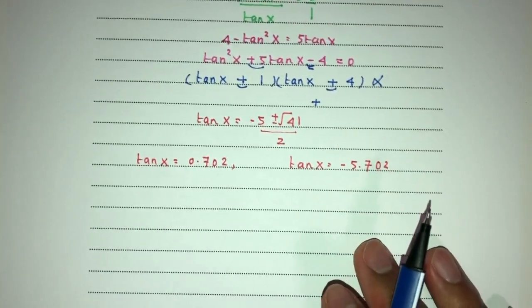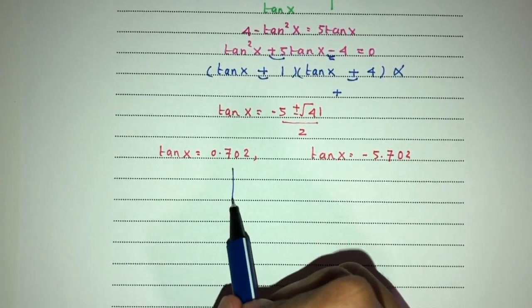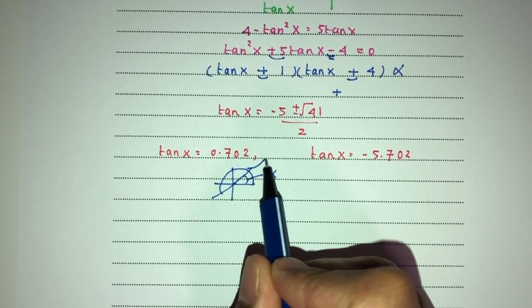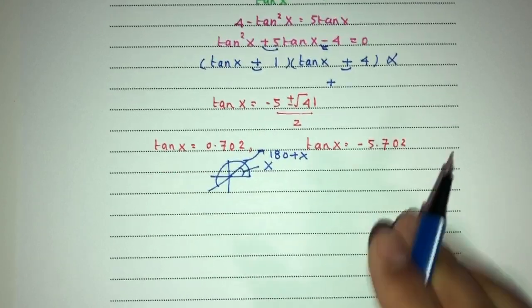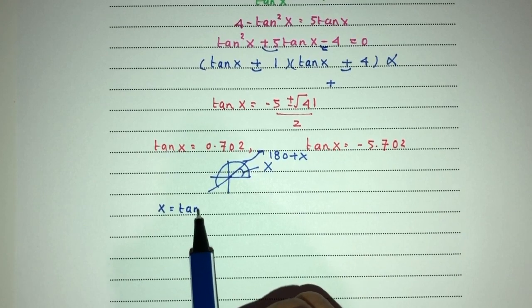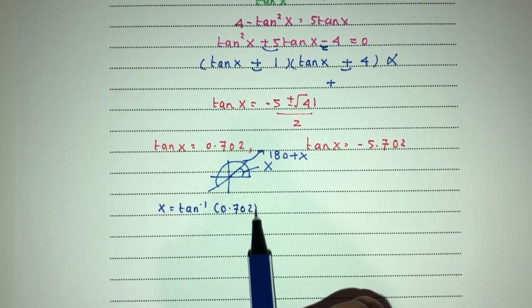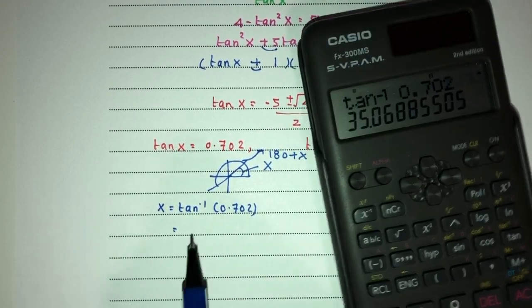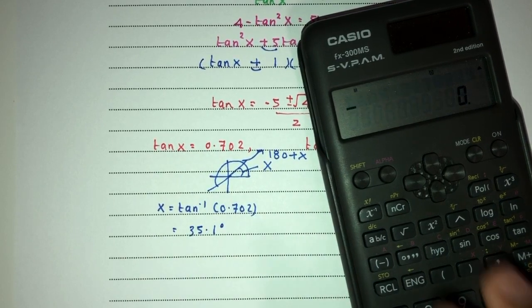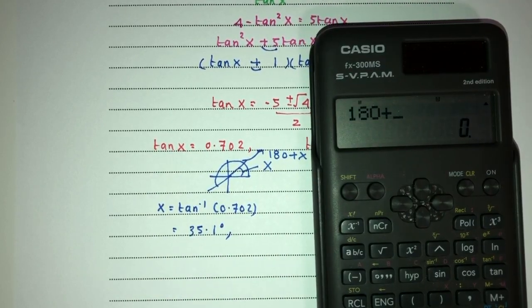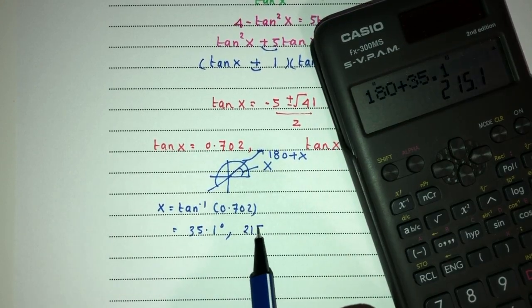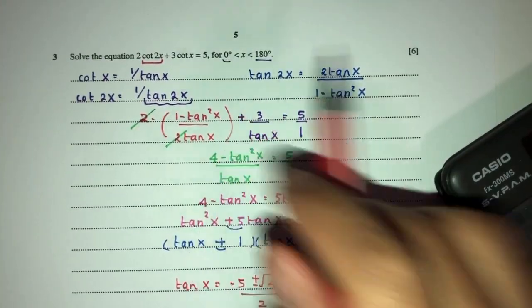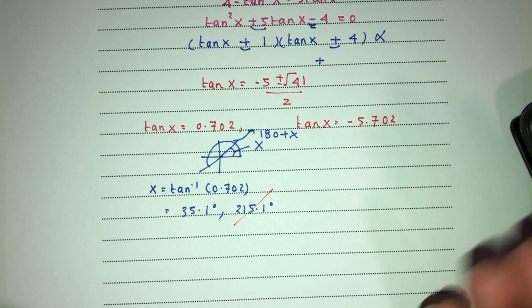Now from here we can try to solve. The first one is pretty easy. Tan is positive, it will be in the first quadrant and in the third quadrant. This will be your value of x directly. And this is the value of 180 plus x. So x will be simply tan inverse of the positive value over here. Let's see what we have. So tan inverse of 0.702. That will be 35.1. But also it will be 180 plus 35.1 which is 215.1 degrees. However, because the value of x is only between 0 and 180, this is not good enough. It will be outside.